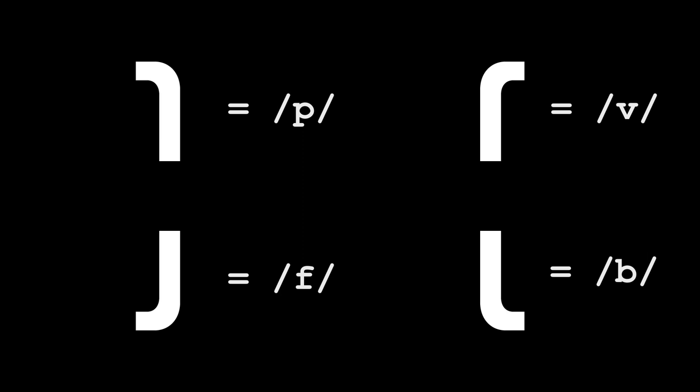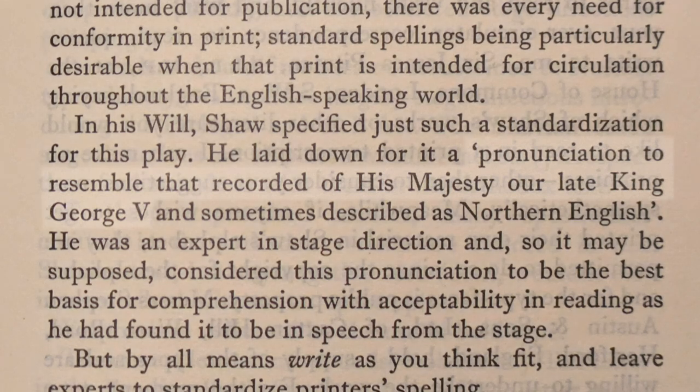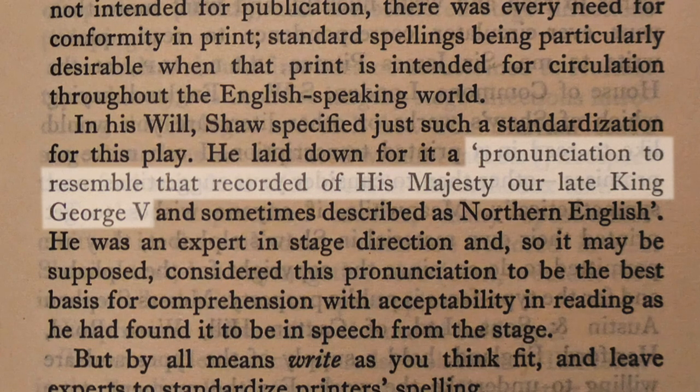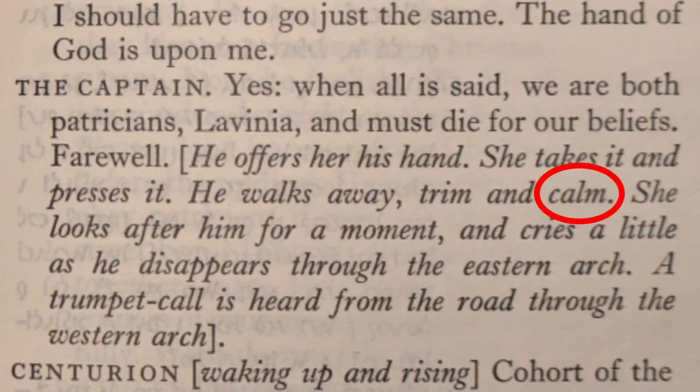Shavian is also optimized for handwriting, being directly inspired by some shorthand systems. That's nice, but of decreasing relevance, and I think it really hurts the readability of some of the characters. And there is also the fundamental problem of phonemic writing systems. Whose phonemes are being encoded here? The instructions to the public trustee executing Shaw's will says that the play is to be translated assuming the pronunciation to resemble that recorded of His Majesty our late King George V. This caused me some problems reading the play. Like when the captain is described as walking away trim and calm. It wasn't until I looked at the parallel text that I realized this meant trim and calm. I guess pronouncing the L was too plebeian for His Majesty. No language is ever pronounced uniformly enough for a single phonemic writing system, so spelling is always going to be weird for some people. And that problem only gets worse as the centuries pass and dialects drift. Soon you'll be back to where English spelling is now all over again.